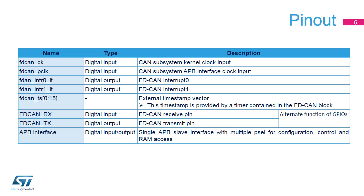Two interrupt outputs enable the FDCAN unit to report events to the Cortex-M4 processor. An external 16-bit timestamp input port can be used by the FDCAN unit to timestamp the transmission or the reception of a message. This timestamp is provided by a timer contained in the FDCAN block. FDCAN-RX and FDCAN-TX have to be connected to the transceiver. The APB slave interface is internally split into three parts, each of them having a dedicated chip select: configuration, control and RAM access.